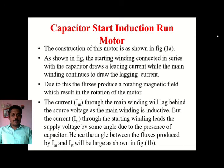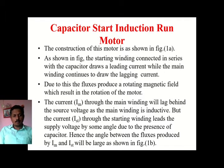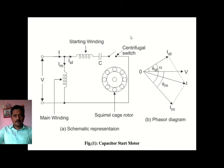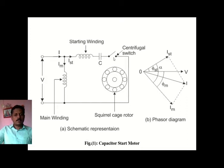First: capacitor start induction run motor. As its title says, it has a capacitor only in the starting condition, but in running condition it will run on the inductor, meaning the winding. I will first explain this with a diagram. The main winding has an inductor-based winding, and in the auxiliary winding we have a capacitor and a centrifugal switch.